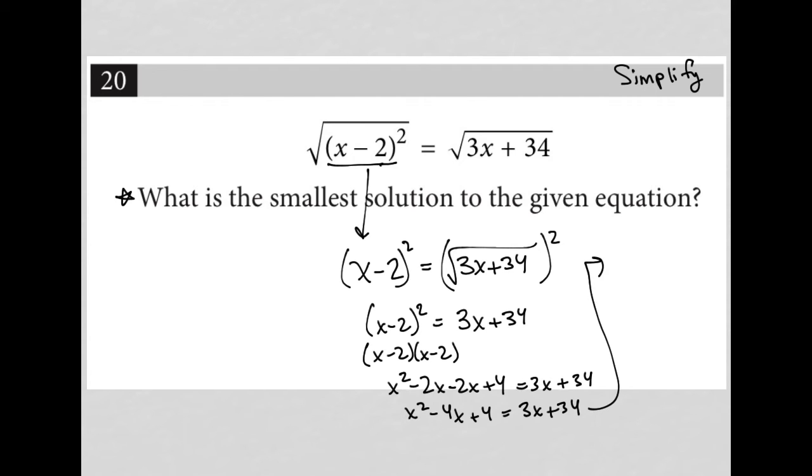Let's go up here for some more space. If I subtract 3x and subtract 34 from the right-hand side and bring it over to the left-hand side, I end up with 0 on the right-hand side. But on the left, I'd have x squared minus 7x minus 30 equals 0.